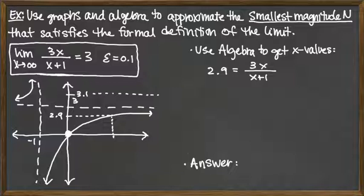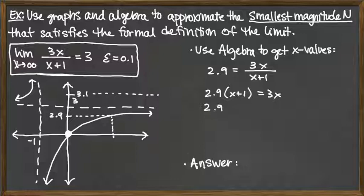The first step would be to get rid of the fraction by multiplying both sides by the denominator. So we'd have 2.9 times the factor x plus 1. We do need the parentheses there because the next step is distributing across the parentheses. So we'd have 2.9x plus 2.9, and that's going to be equal to 3x.